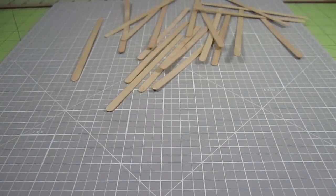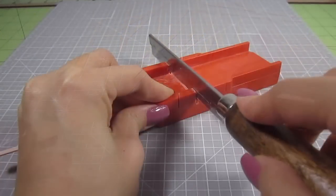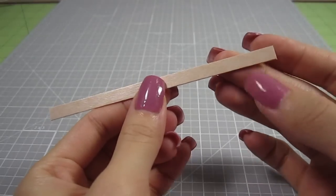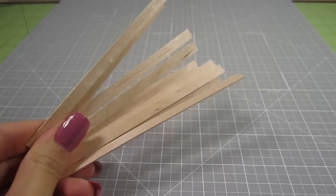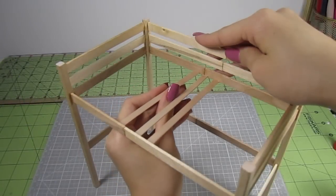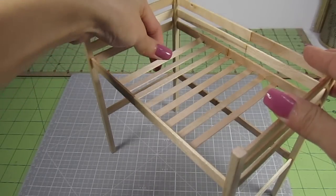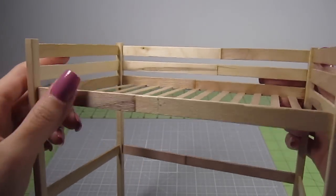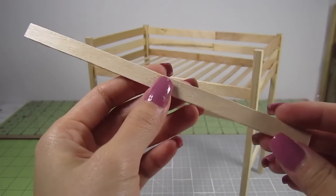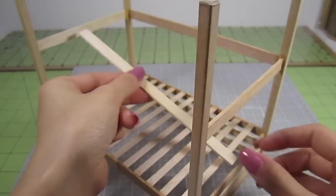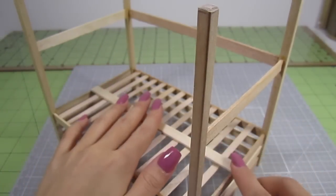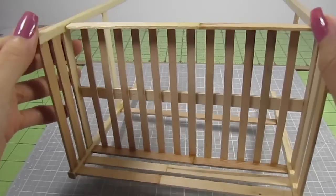Now grab a bunch of coffee stirrers. These are a quarter of an inch in width. Cut them down to 4 and a quarter inches in length. Make a bunch of these. I ended up using 12 of these in total. Glue them along the bed frame between the 3rd popsicle sticks down from the top. This is what will hold up your mattress. For some extra support, I made another 6 and 3 fourths inch piece and glue it to the bottom of those coffee stirrers. This is shaping up really nicely.